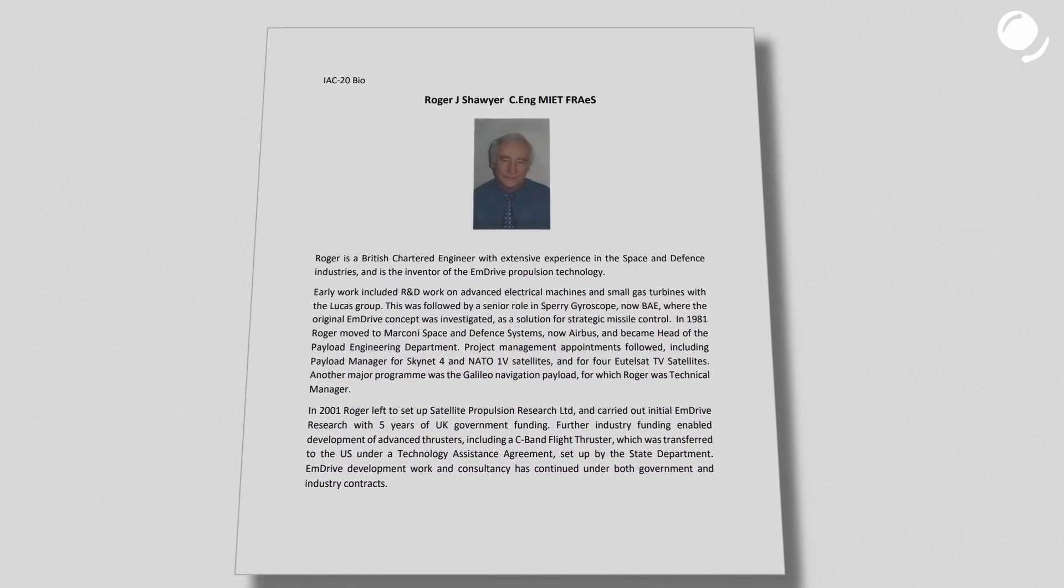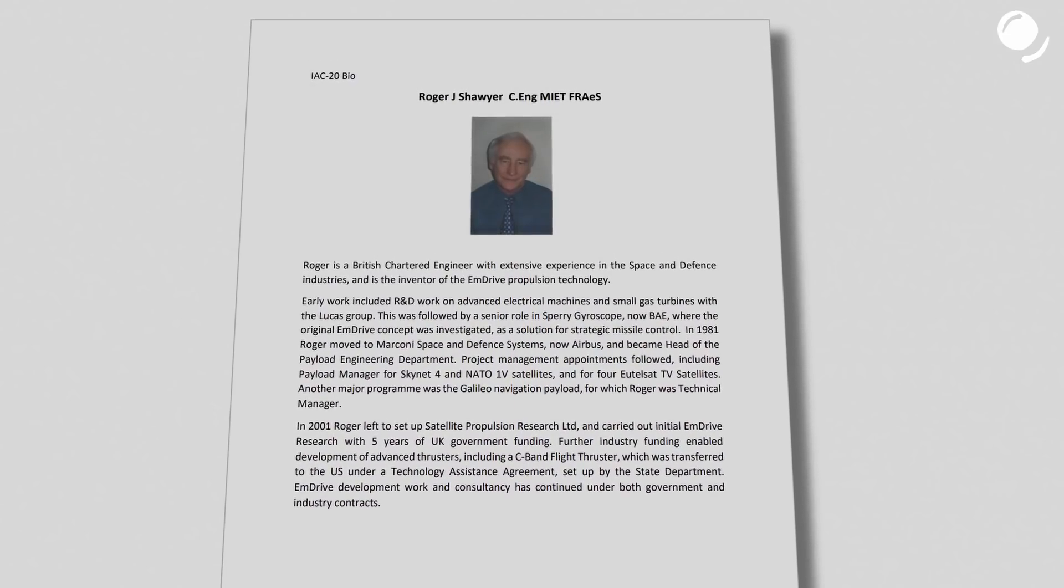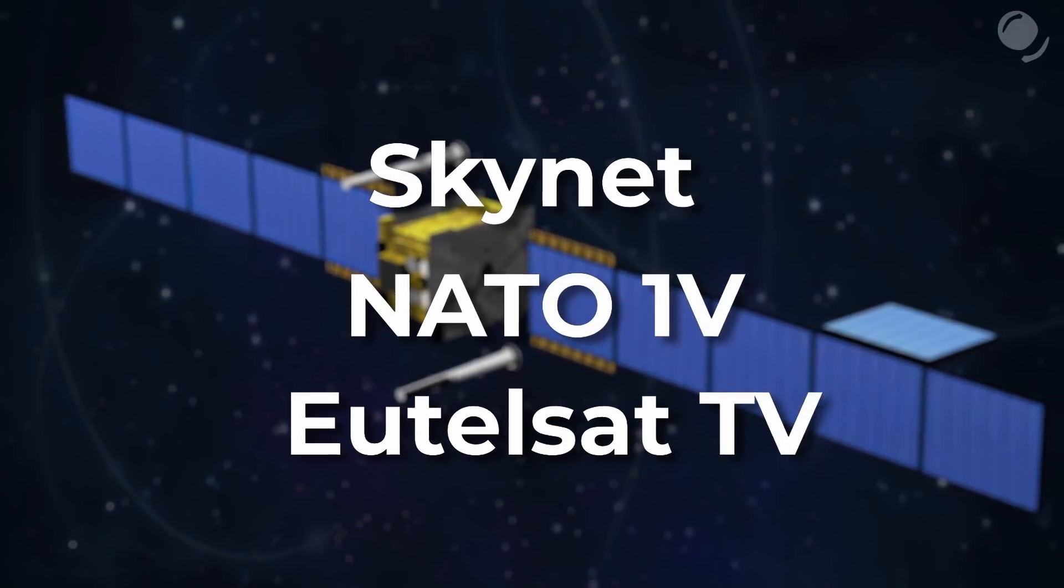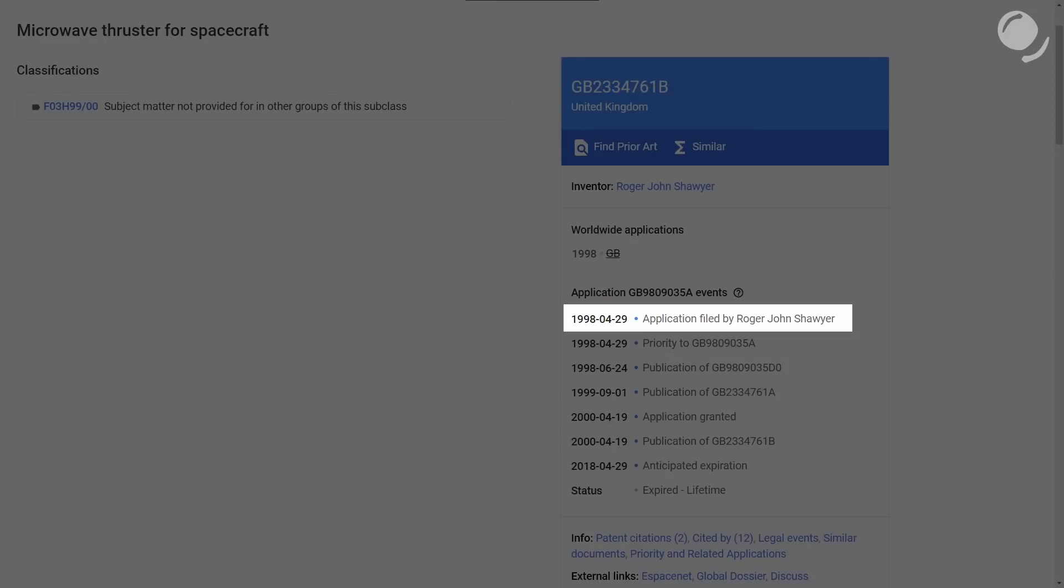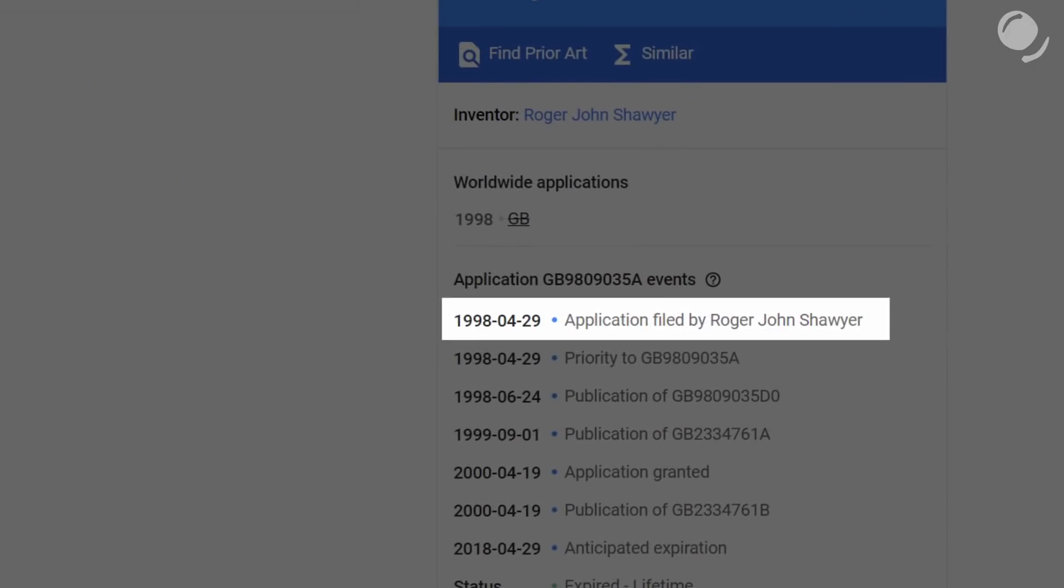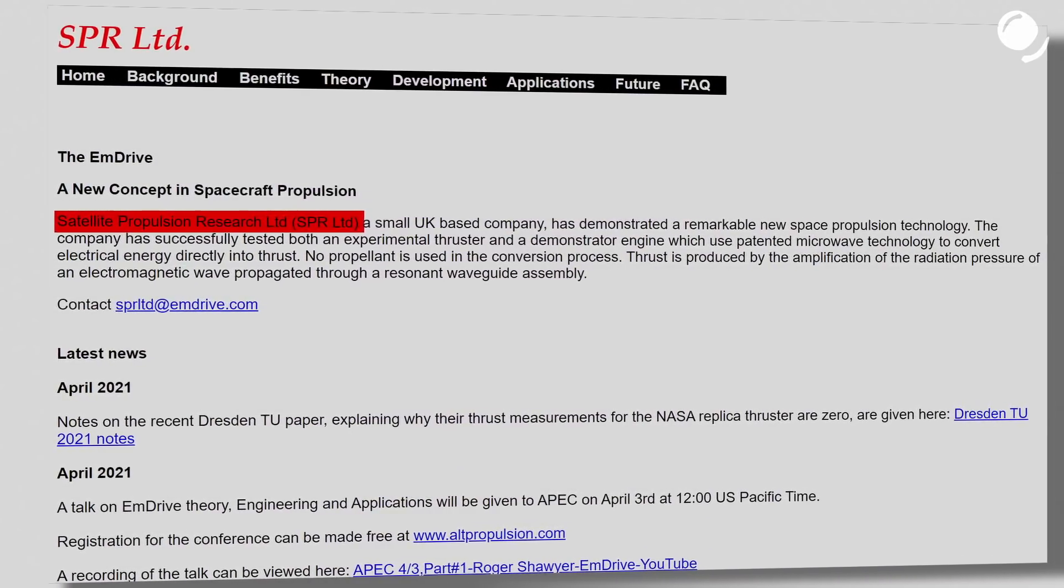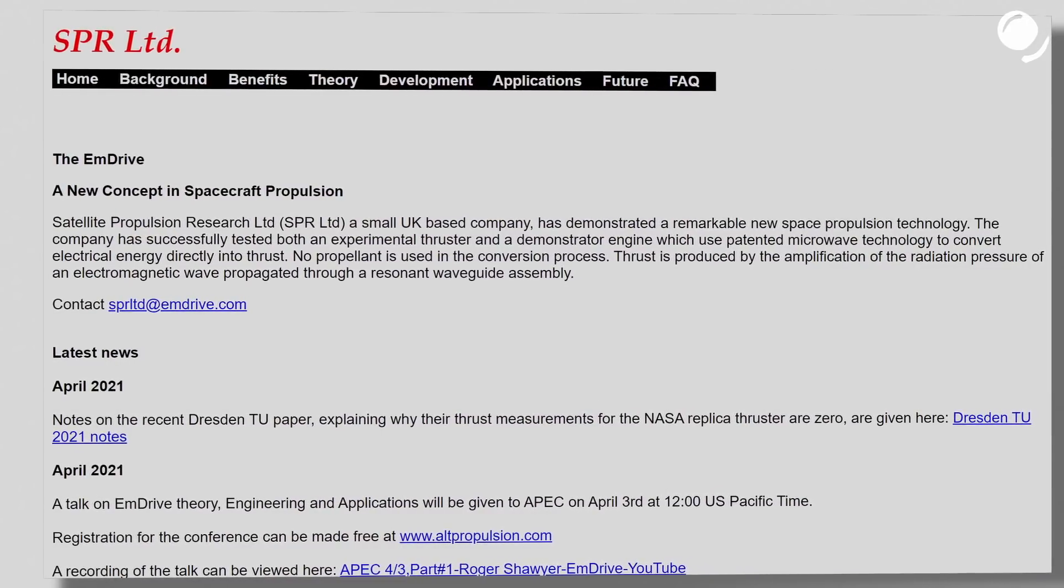So, the impossible drive. Actually it's called that, not because it's a perpetual motion machine, though there are similarities. Let's begin with the person who started the whole thing, British engineer Roger Shawyer. According to this document on his own website he's a very experienced engineer who worked in space and defense spheres, worked for Airbus, and was involved in the development of such satellites as Skynet, NATO 4, Eutelsat TV. He invented EmDrive in the 90s. I have found a patent filing for the Shawyer's microwave drive from 1998. In 2001 he founded Satellite Propulsion Research Limited, in short SPR, and this company continues to work on EmDrive.